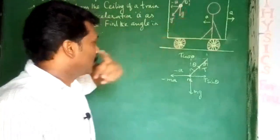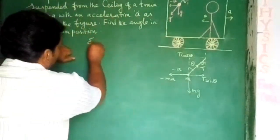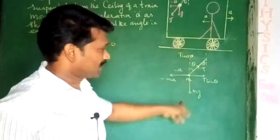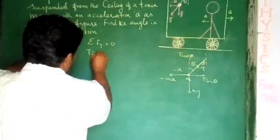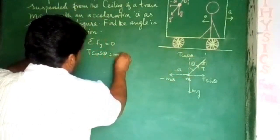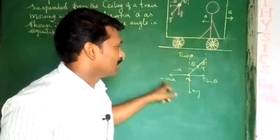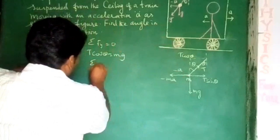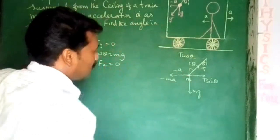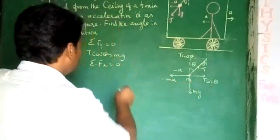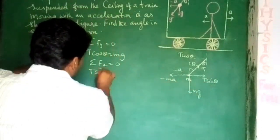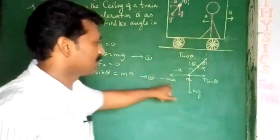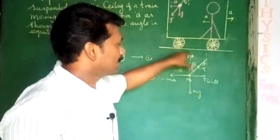For the equilibrium position, the summation of forces equal to zero. In the vertical direction along the y-axis, T cos theta is equal to mg.